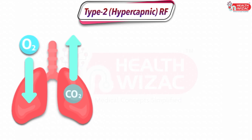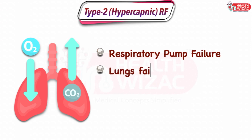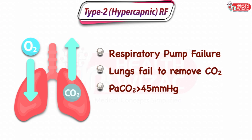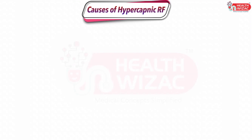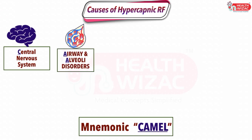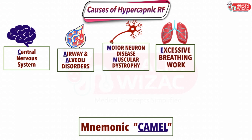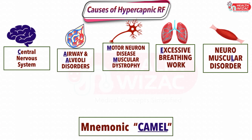Type 2 respiratory failure presents with respiratory pump failure and is a condition in which the lungs fail to remove carbon dioxide, presenting with a PaCO2 of more than 45 mmHg on ABG test. Its primary causes can be remembered with the mnemonic CAMEL: C stands for CNS causes, A stands for Airway and Alveolar disorders, M stands for Motor Neurone disorders, myopathies and muscular dystrophies, E stands for Excessive work of breathing, and L stands for Neuromuscular disorders.